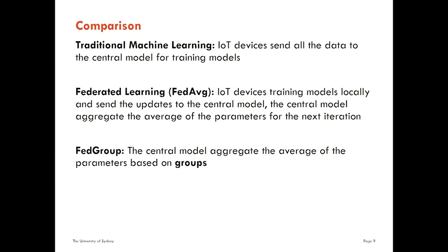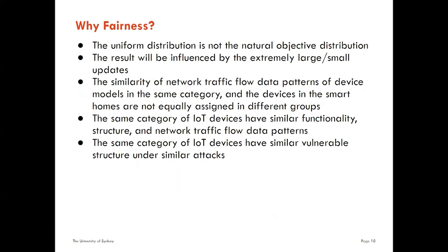For our Federated Group model, the central model aggregates the average of parameters based on groups, which can help us solve the problem of unfairness. The uniform distribution is not the natural objective distribution. The result will be easily influenced by extremely large or extremely small updates. The similarity of network traffic flow data patterns of device models in the same category means devices in smart homes are not equally assigned in different groups. The same category of IoT devices has similar functionality, structure, and network traffic flow data patterns, and similar vulnerability under similar attacks.